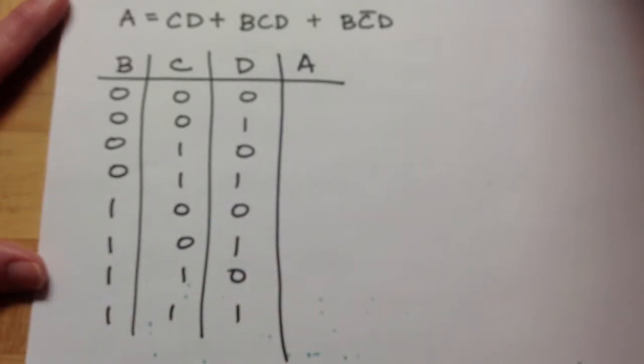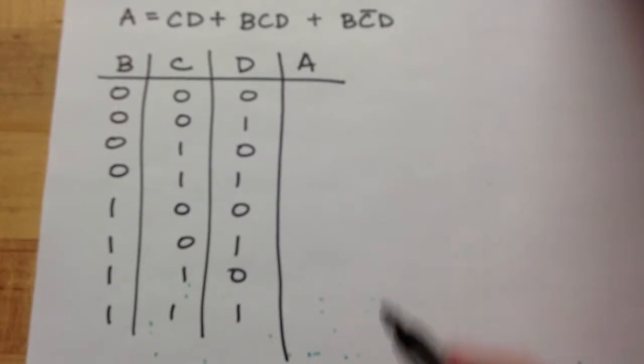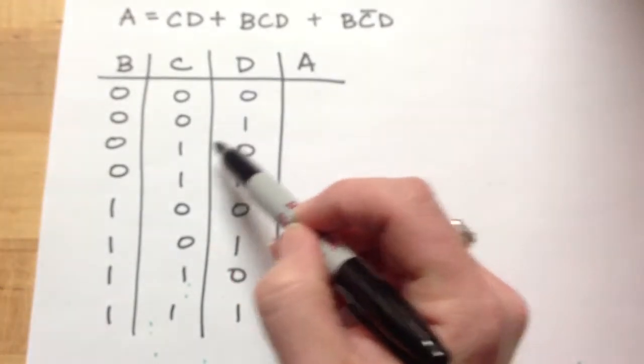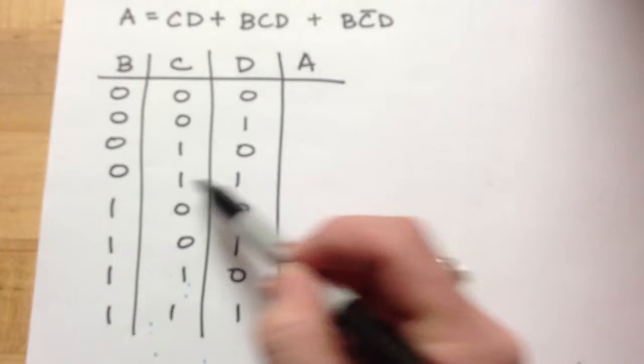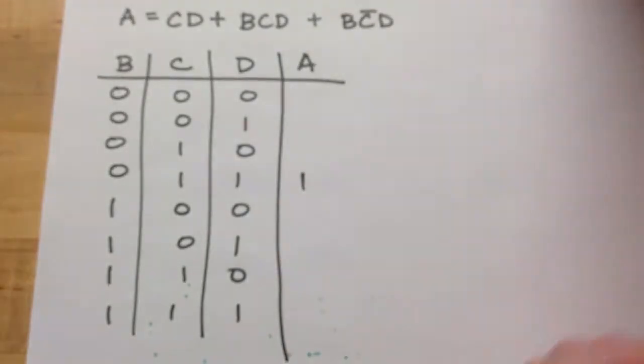All right, so now let's go through and look at our terms. I have CD. When I just have CD, I don't care what B is. So CD, here it is. I have a C for 1, a D. I'll put a 1 there in my truth table.